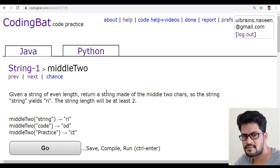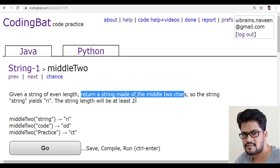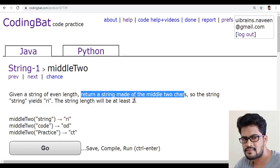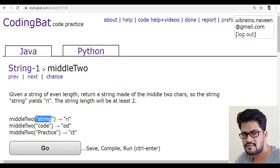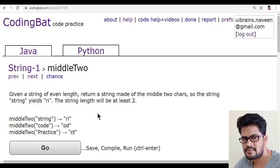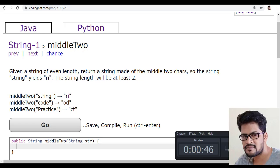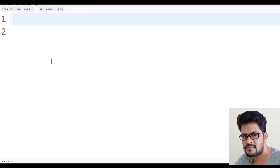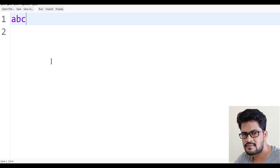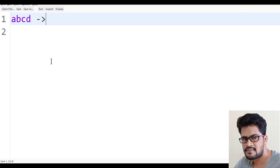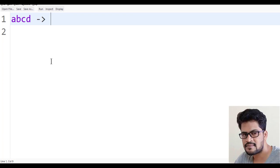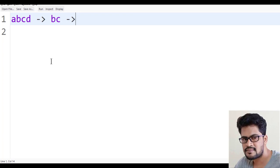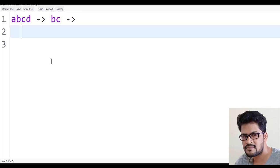We have to return only the two characters from the middle string, and it's an even length string. Let's say if I have a string a, b, c, d. In this, you'd return b, c, the center of the string, right? But how do you achieve this one?